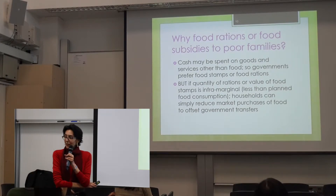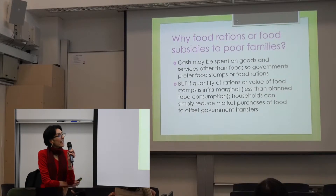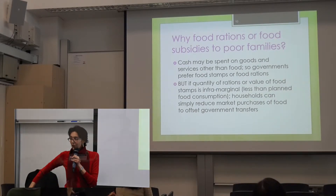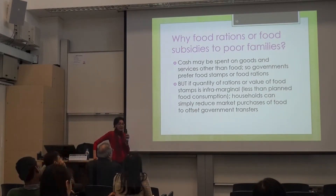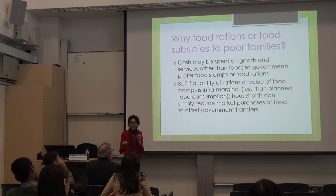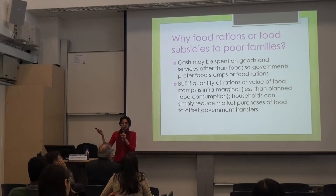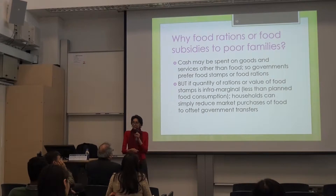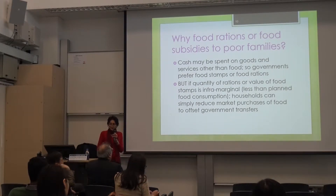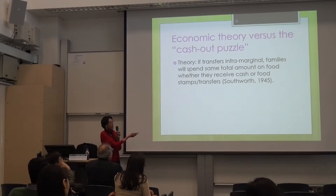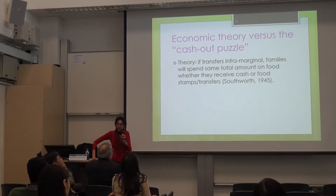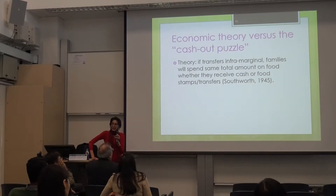However, economic theory back in the 1940s pointed out that if the quantity of food you give these families — or the value of the food stamps — is intramarginal, that is, less than their planned consumption of food, they can simply reduce their market purchases of food to offset government transfers. So if they were consuming 40 kgs of rice from the market and the government gives them 10 kgs, they just buy 30 kgs and treat the rest as a cash transfer. Economic theory predicts that if these transfers are intramarginal, it doesn't matter whether you give the family food or cash — total spending on food will be the same. This was pointed out in 1945 by Southworth.